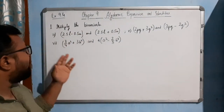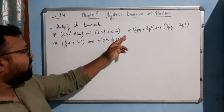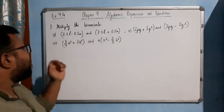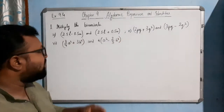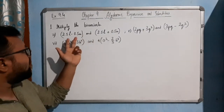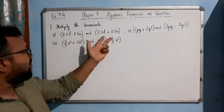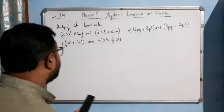I have selected only 3 options: 3, 5, and 6 — the rest you can do by yourself. We will try to multiply 2 binomials; let's see how we will do this one.